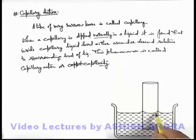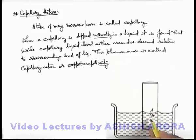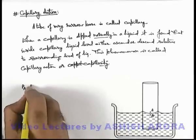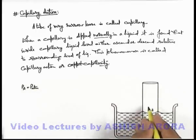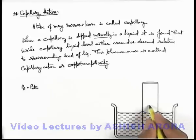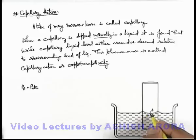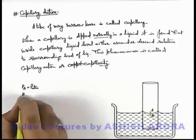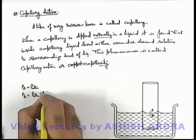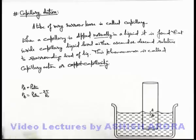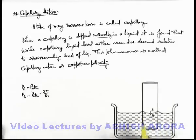Consider point A above and point B below this curvature. The pressure at point A is atmospheric pressure, P_atm, because point A is in contact with the normal atmosphere. Point B is right below the curvature and is on the concave side towards the atmospheric pressure. So at point B the pressure will be less than atmospheric pressure by a value 2T/R, where R is the radius of curvature. So pressure at point B = P_atm − 2T/R.